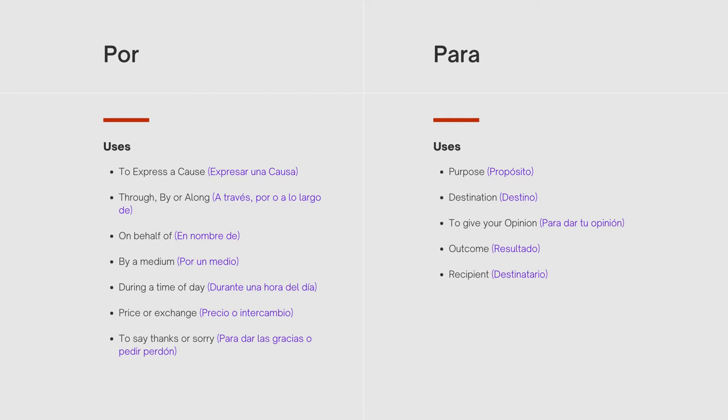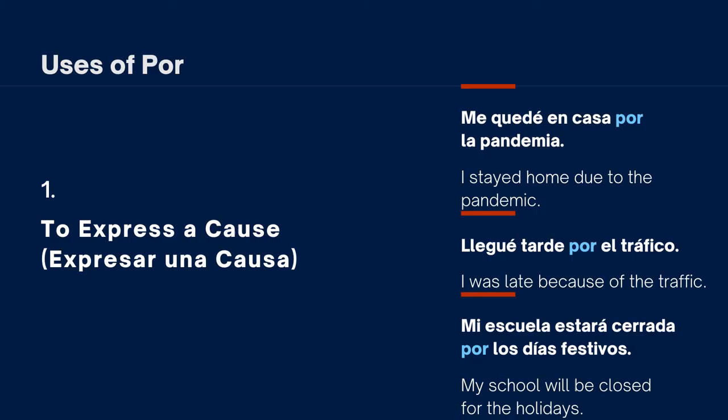The first use of por is to express a cause — expresar una causa. A cause is basically anything that interrupts our daily lives, something we cannot control. For example: 'Me quedé en casa por la pandemia' (I stayed home due to the pandemic); 'Llegué tarde por el tráfico' (I was late because of the traffic); 'Mi escuela estará cerrada por los días festivos' (My school will be closed for the holidays). The causes — the pandemic, traffic, holidays — are all things we cannot control.